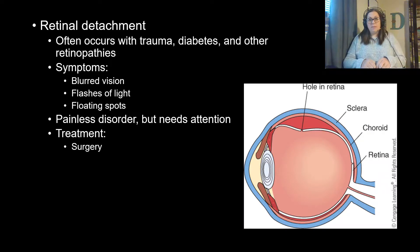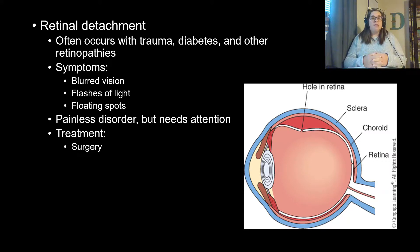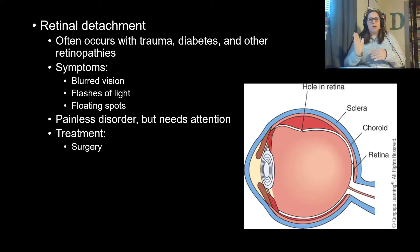Retinal detachment is a medical emergency where the retina pulls away from the choroid, often due to eye trauma, diabetes, or other retinopathies. Symptoms include blurred vision, flashes of light, floating spots, and progressive darkening — but no pain. If not treated immediately, blindness will occur. Treatment may involve surgery to reattach the retina or insertion of a gas bubble into the posterior cavity to push and smooth the detached retina back into place.